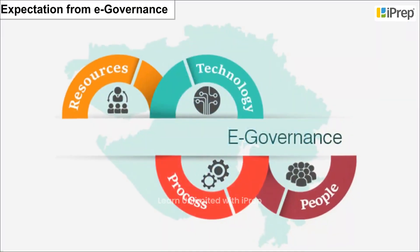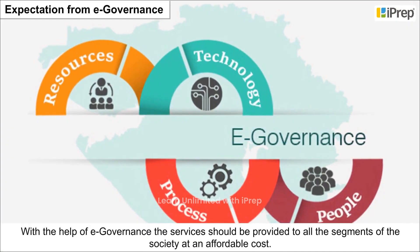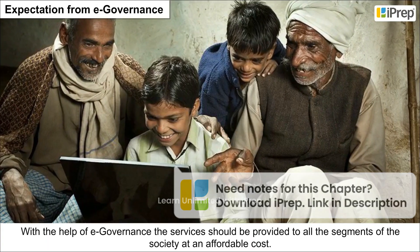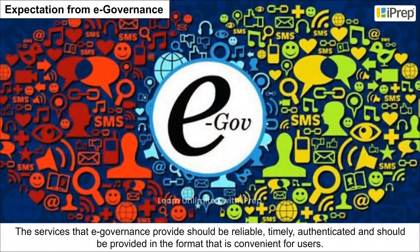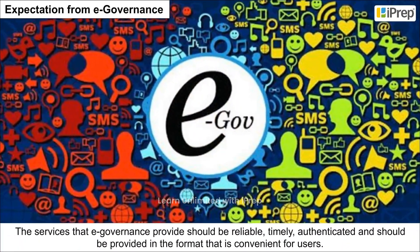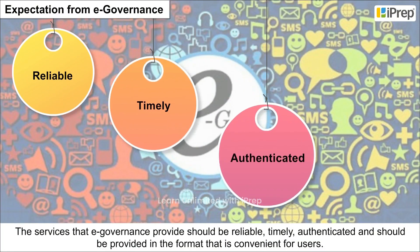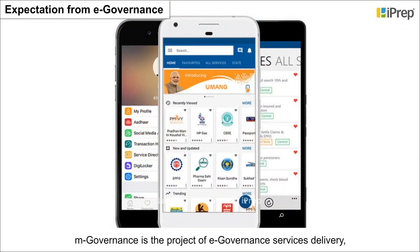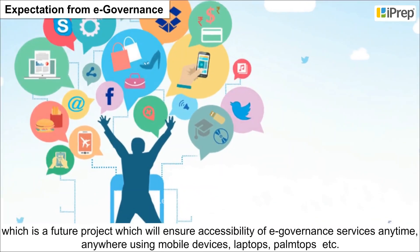Expectation from e-governance: with the help of e-governance, services should be provided to all segments of society at an affordable cost. The services that e-governance provides should be reliable, timely, and authenticated, and should be provided in a format that is convenient for users. M-governance is the project of e-governance services delivery, which is a future project